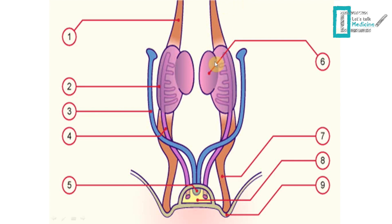Here is a picture of the undifferentiated genital tract — we don't yet know if this is male or female. Number 6 shows the undifferentiated gonads, which can become either testes or ovaries. The blue ducts are the Müllerian ducts and the pink ducts are the Wolffian ducts. Number 8 is the urogenital sinus, which is very important. The brown lines represent the gubernaculum, number 7, and number 9 shows the labioscrotal swellings.